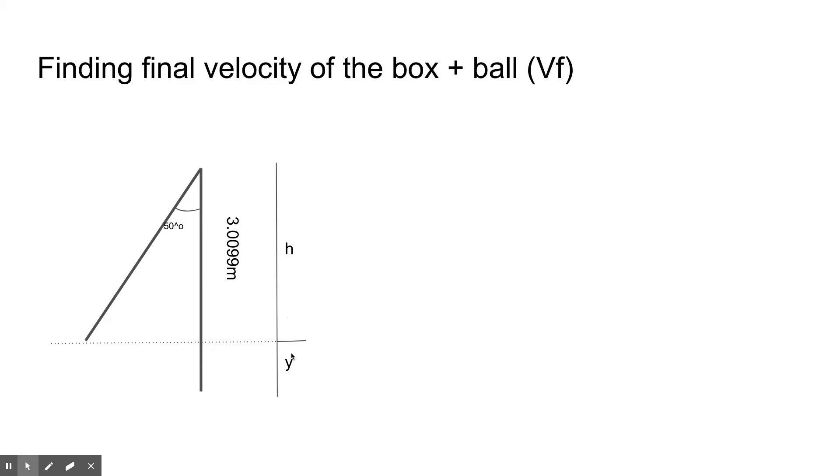So what we need to find is the y value, the height it raised. From that we can use conservation of momentum and conservation of energy to find the initial velocity. So we see that cosine of this angle, cosine of 50, is equal to adjacent which is this over hypotenuse which is 3.099 minus y. And we get the y value to equal 3.099 minus 3.099 times cosine of 50, and we get a final y value of 1.075 meters.